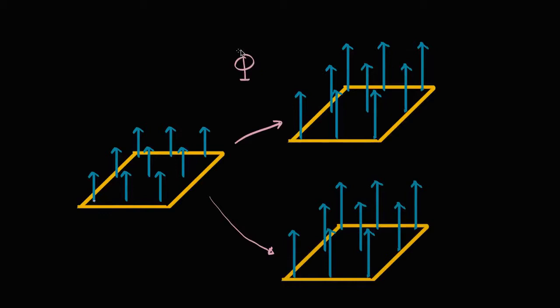At every point on the surface defined by the wire, the magnetic field has gotten stronger — we have increased the flux. We know from Faraday's law that a change in flux is going to induce a current in the loop. The interesting question is: what direction is that current actually going to go in? We have two options: the current could go in the clockwise direction, or it could go in the counterclockwise direction.